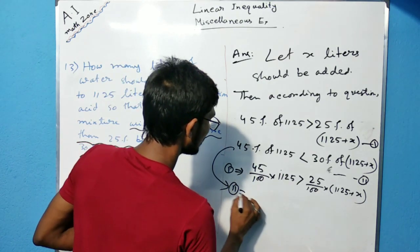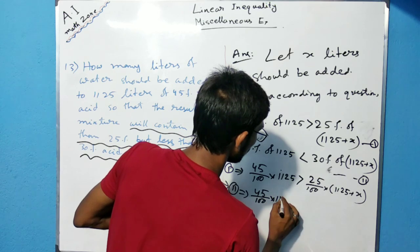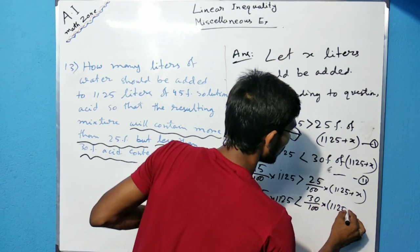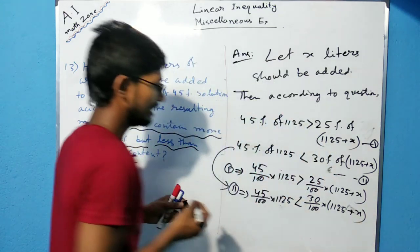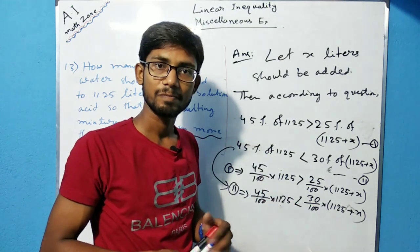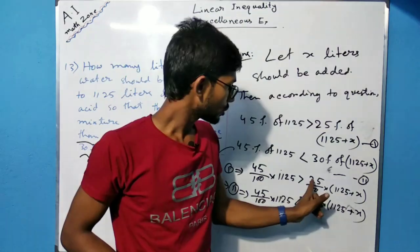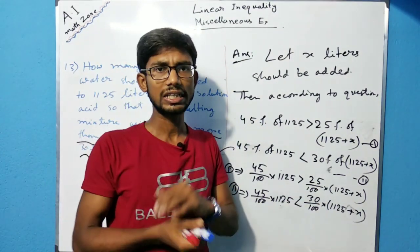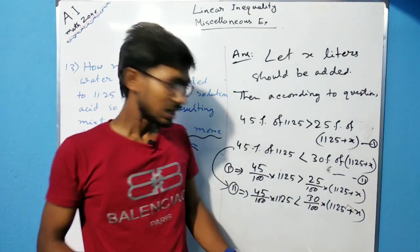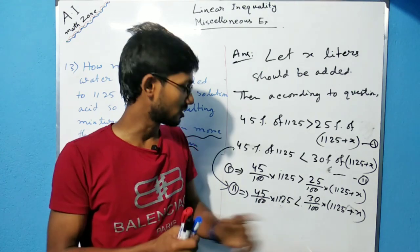The second inequality is: 45 divided by 100 into 1125 is less than 30 divided by 100 into (1125 plus x). Now solve both inequalities and represent the solution on the number line, find the common region. Note that the signs are strict 'less than' and 'greater than' here, so the endpoints are not included.